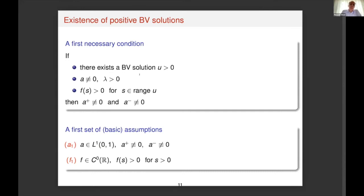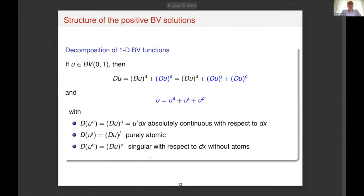So we set the following assumption: a changes sign, and the function f is positive for s positive. Under this basic assumption, I wish to describe the structure of the positive BV solutions. In order to state our result, let me recall the following decomposition property of bounded variation — in particular one-dimensional — functions. In one dimension the measure dU can be split into an absolutely continuous part and a singular part, which is a purely atomic measure.